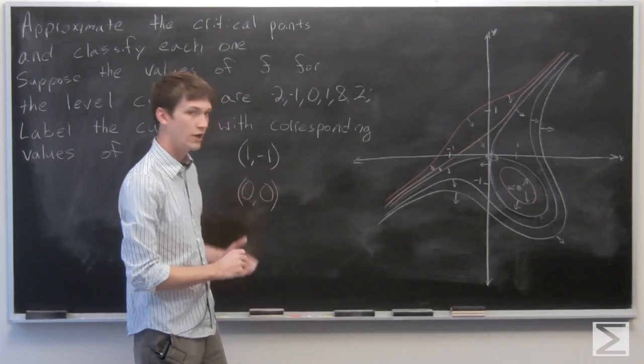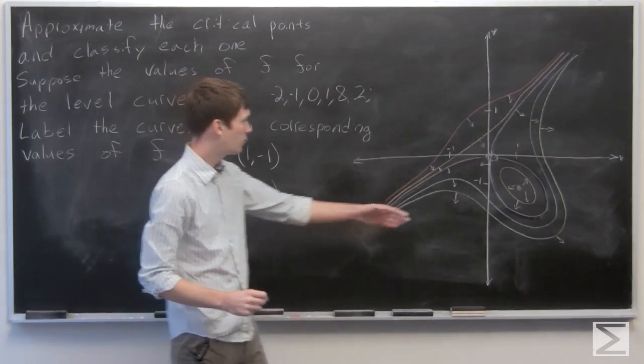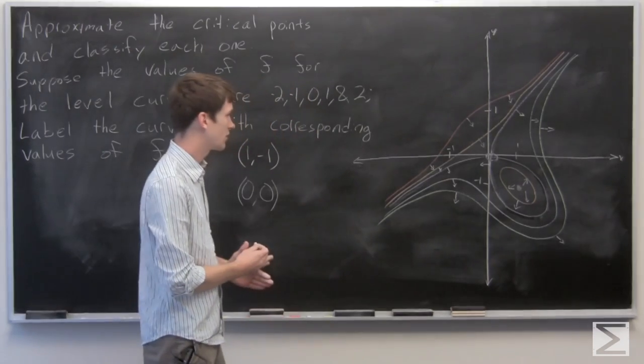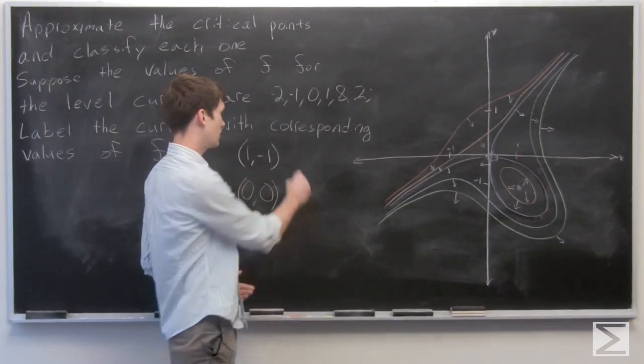So we have 0, 0, and 1, negative 1. And we know that when the level set crosses itself, it is a saddle.